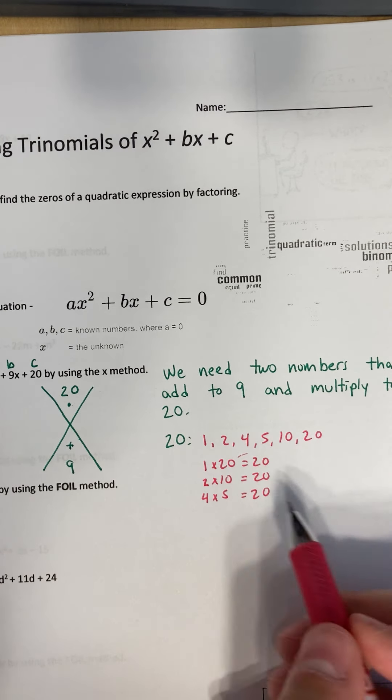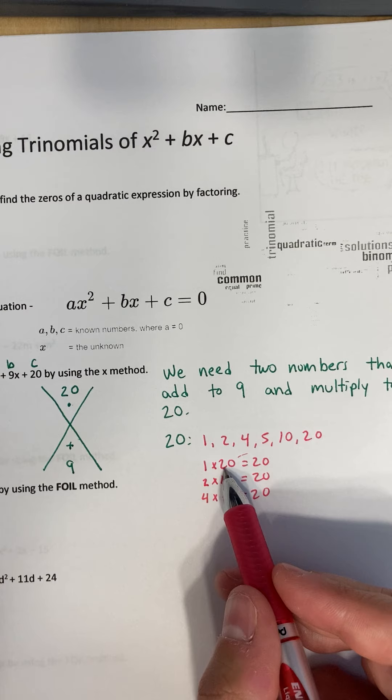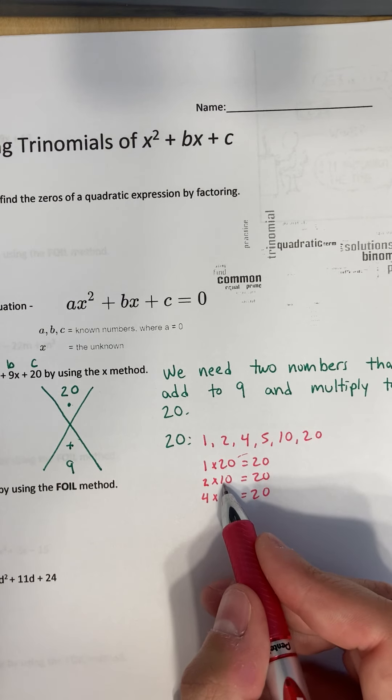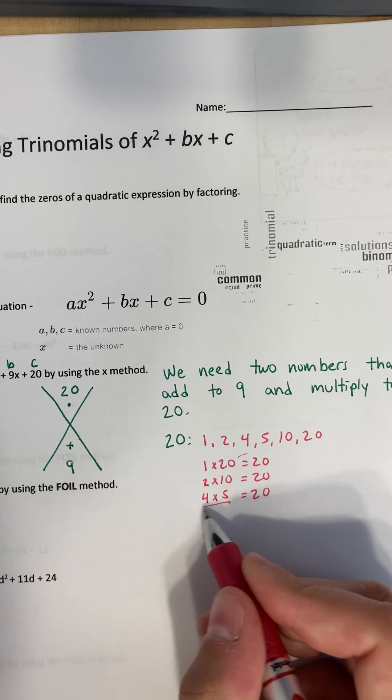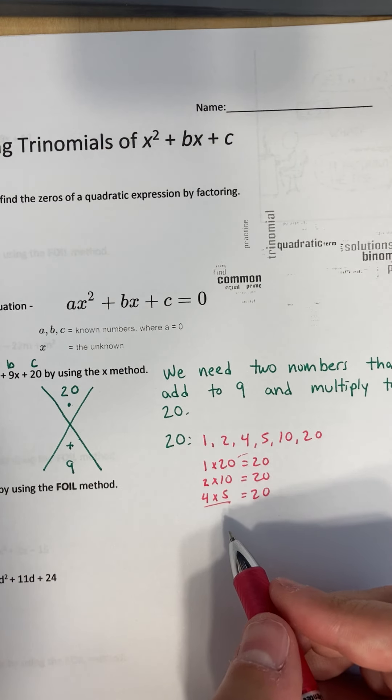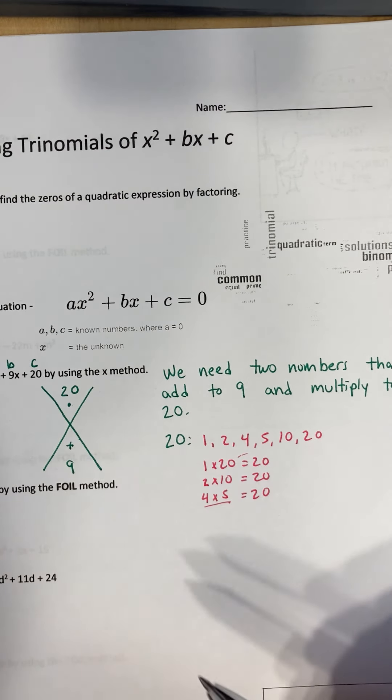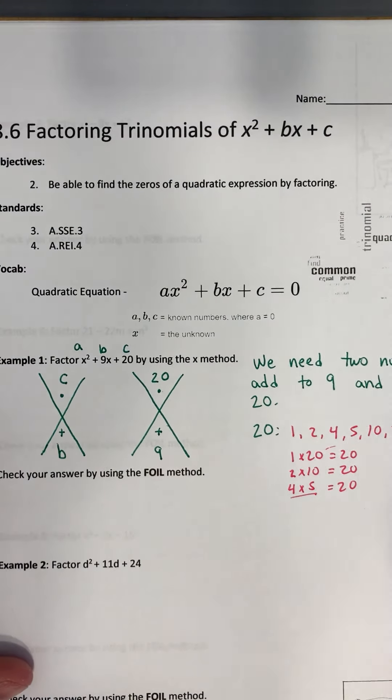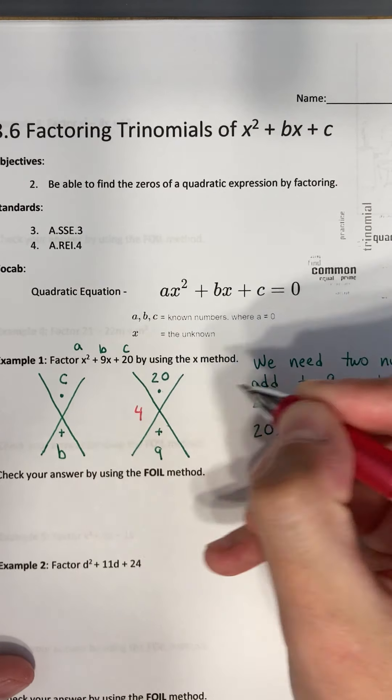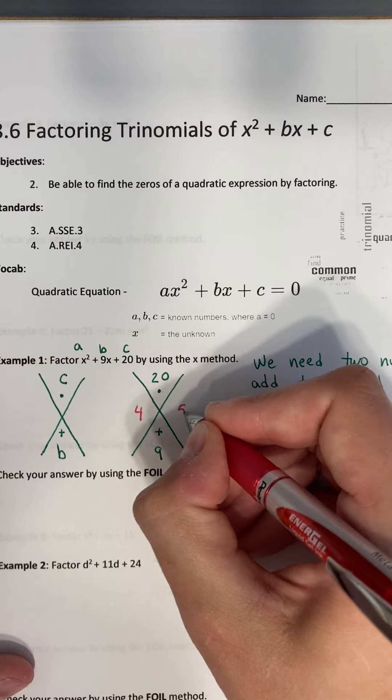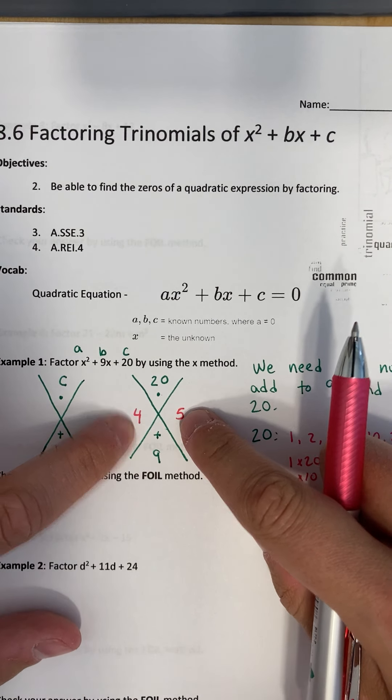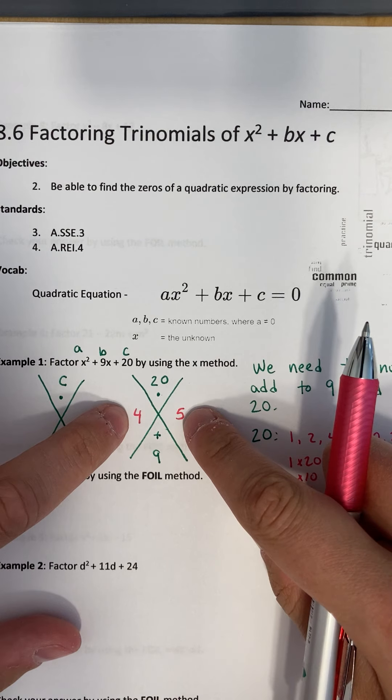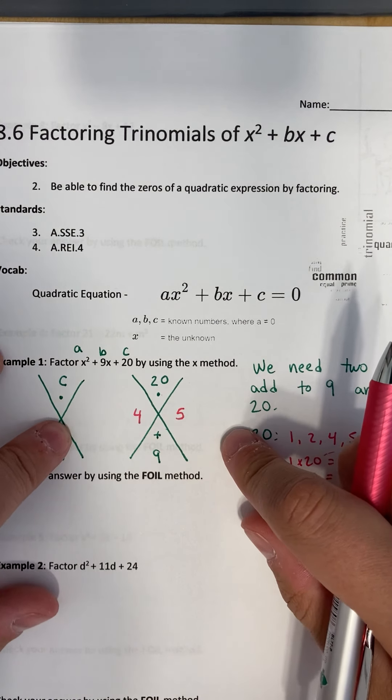So do any of these add together to get 9? We all know that they multiply to get 20. But 1 plus 20, that doesn't equal 9. 2 plus 10 does not equal 9. But 4 and 5, when you add 4 and 5 together, what do you get? You get 9. So we can write 4 over here, and we can write 5 right here. So I've got two numbers that add to get 9 and two numbers that multiply to get 20.